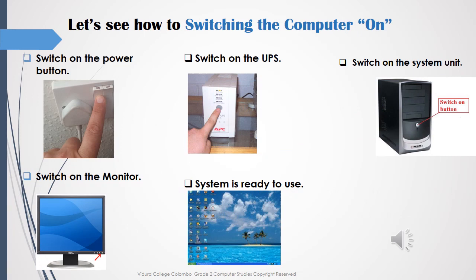Let's see how to switch the computer on. First step: switch on the power button. Second: switch on the UPS. Third: switch on the system unit. Fourth: switch on the monitor.